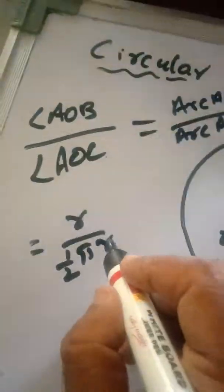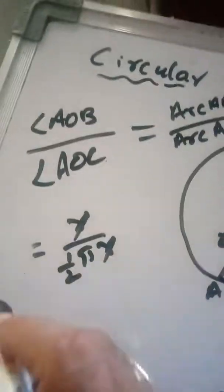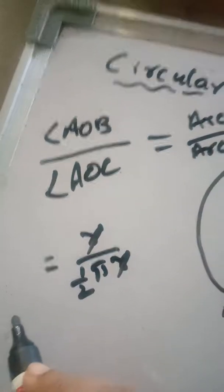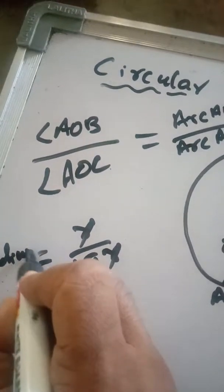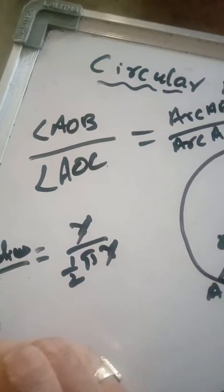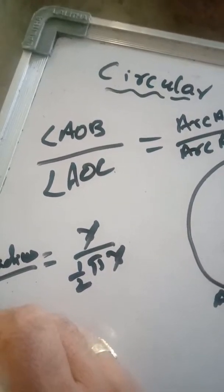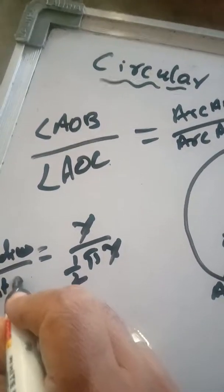This R and this R cancel. Angle AOB means 1 radian. 1 radian divided by this right angle.